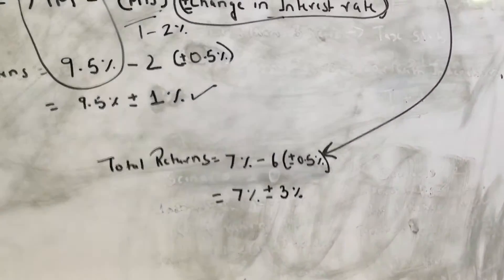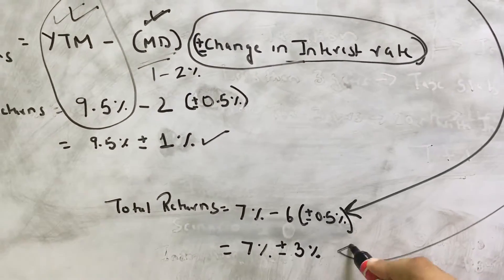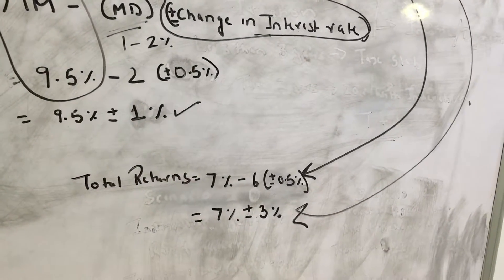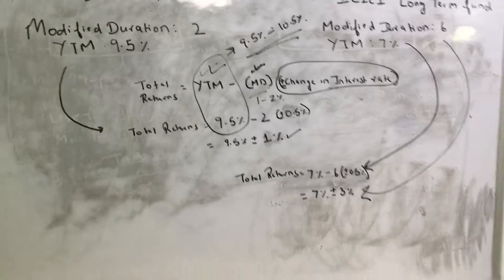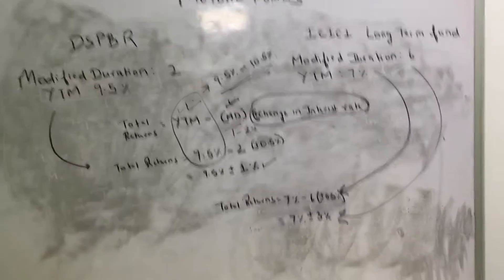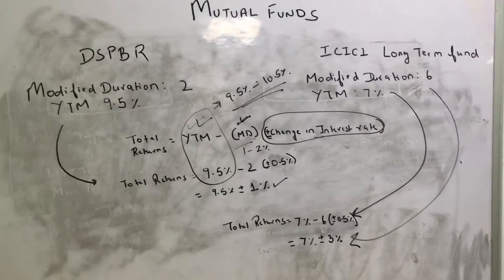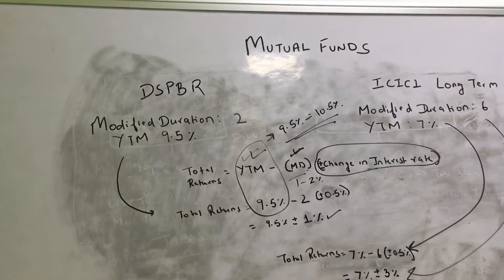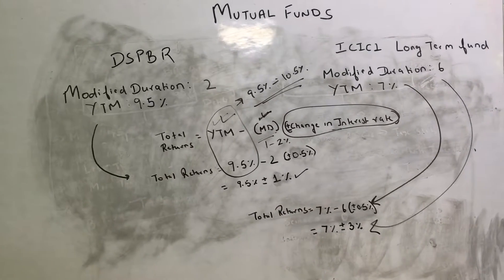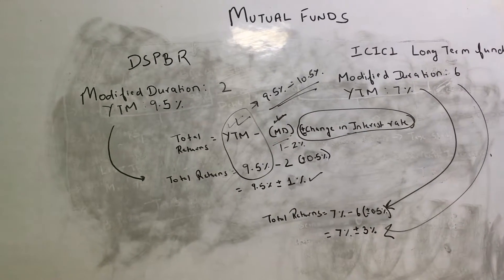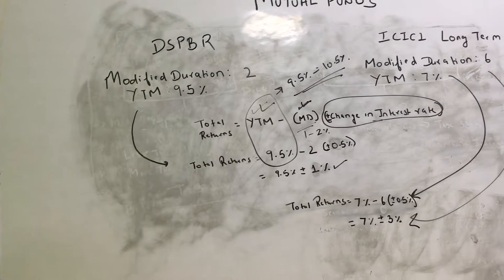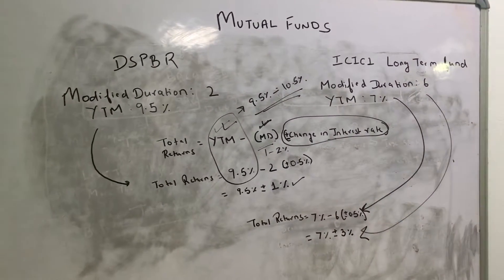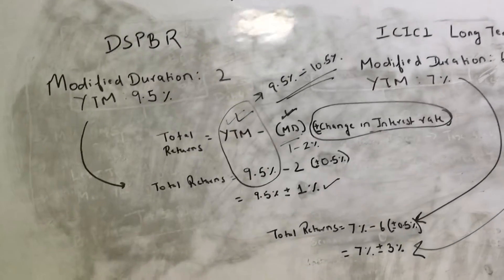Whereas income and duration funds are very volatile, very sensitive to the interest rate scenario in the market. And hence we recommend income and dynamic funds only to people who have a horizon of close to about three to five years, whereas we are more bullish and recommend more accrual and corporate bond funds rather than the income and duration products.